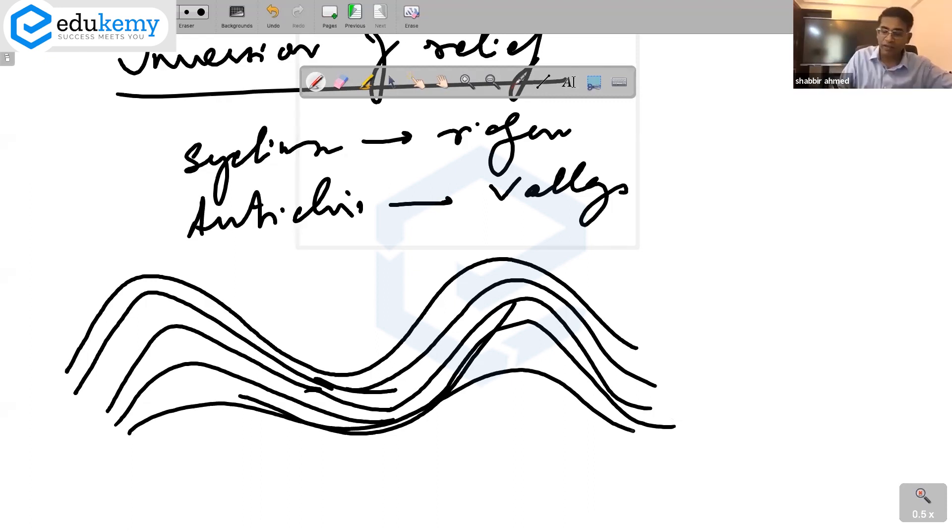But because of erosion along the crest line here, this part goes down and this part stays above. So, inversion of relief is a bit different.